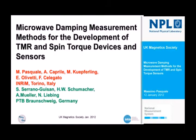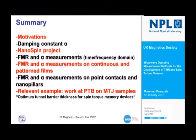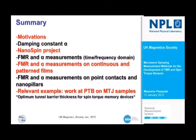The activity has been supported by many collaborators both at INRIM and at PTB in the group of Hans. The summary is: I would like to tell you about our motivations, describe what the damping constant alpha is and how it can be used, give a brief overview of the NanoSpin project recently concluded within the MetMags framework, and give details about ferromagnetic resonance and damping measurements in different domains and different types of samples.